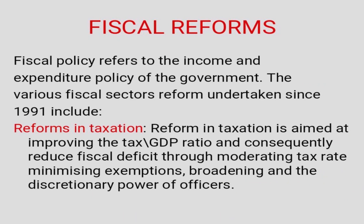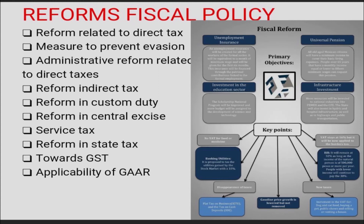The last topic is fiscal reform. Fiscal policy refers to the income and expenditure policy of the government. Various fiscal sector reforms have been undertaken since 1991. Reform in taxation is aimed at improving the tax-to-GDP ratio and reducing the fiscal deficit through modernization of tax rates, minimizing exemptions, and reducing the discretionary power of officers. Reforms include: reforms related to direct tax, measures to prevent tax evasion, administrative reforms related to direct tax, reform of indirect tax, reform in custom duty, reform in central excise and service tax, reform in state tax towards GST, and application of the General Anti-Avoidance Rule (GAAR).